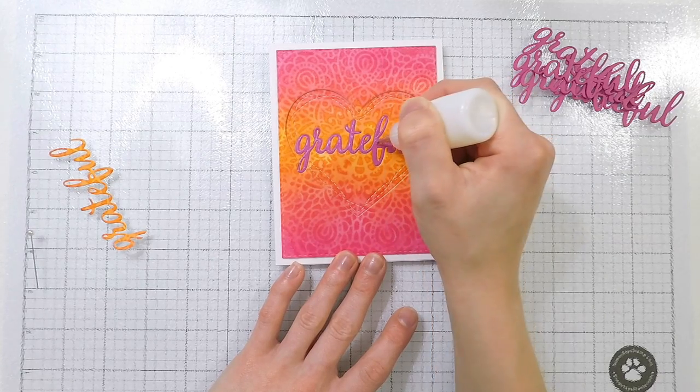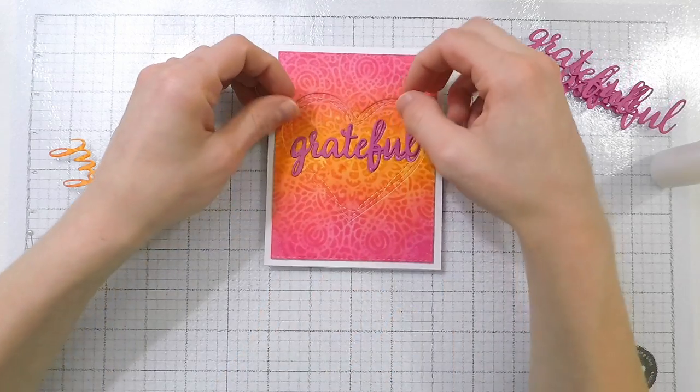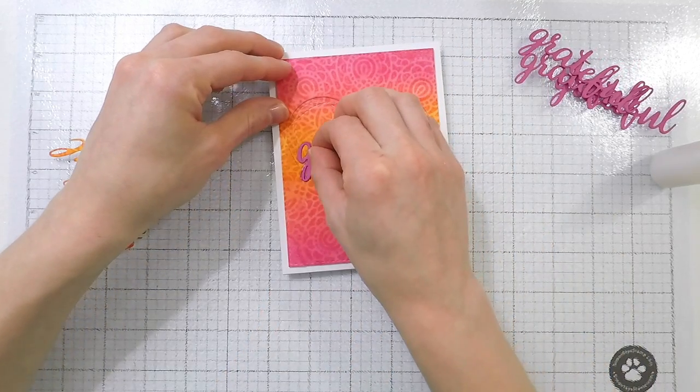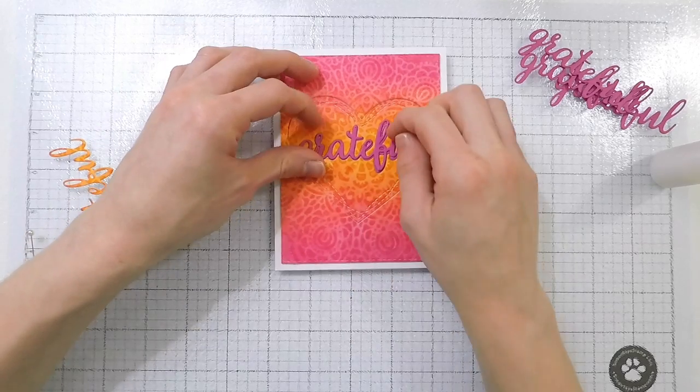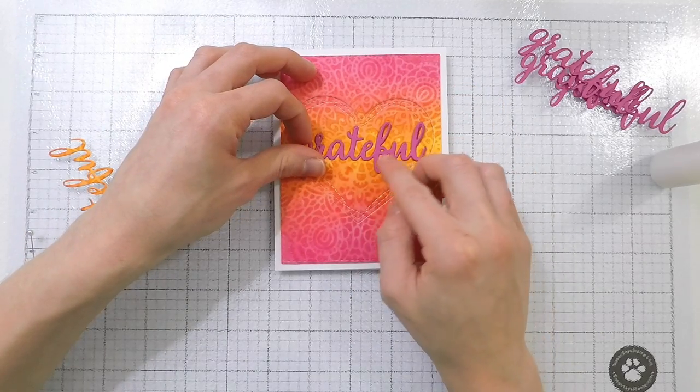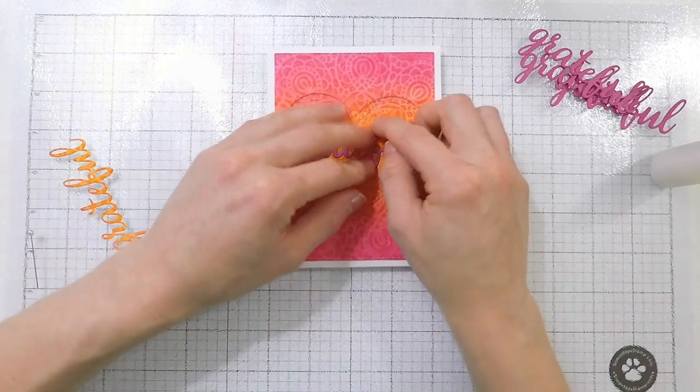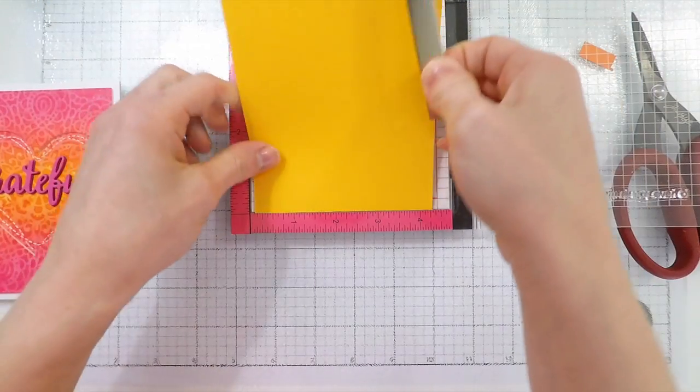I'm also using that liquid glue to adhere all of these grateful pieces on top of each other. I'm making sure to line them up perfectly and I press them down really good so that way they hold in place and then we end up with a really dimensional sentiment as you can see there on the left hand side of the screen.